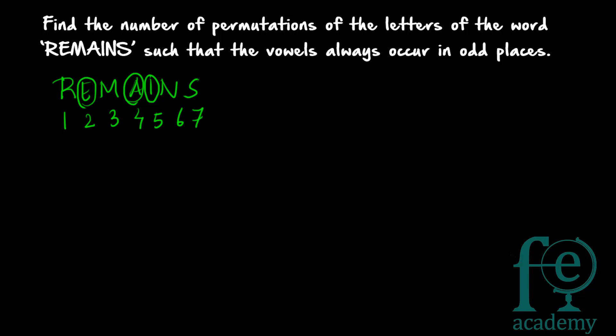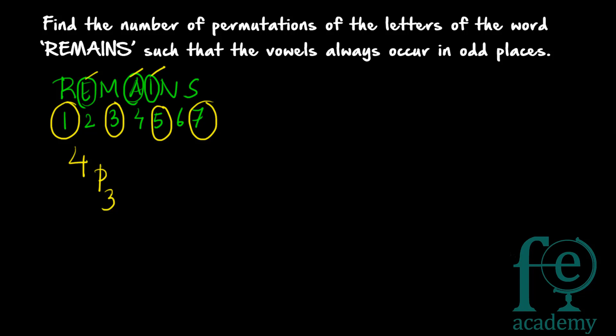The first step is to find how many odd places there are. There are seven letters, so there are seven positions: 1, 2, 3, 4, 5, 6, 7. The odd places are 1, 3, 5, and 7 — so there are four odd places. There are three vowels to be placed in four available odd places. You can do that in 4P3 ways, since order matters and it is a case of permutation.